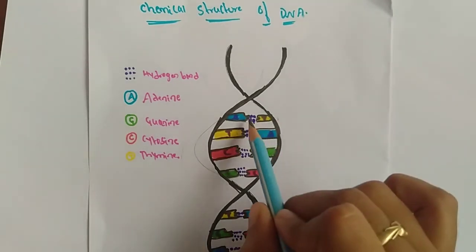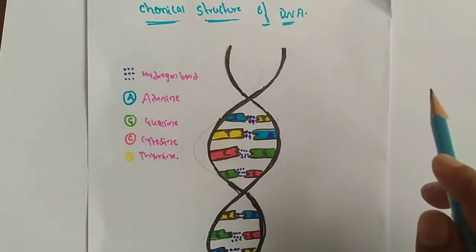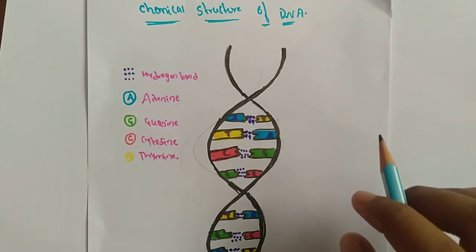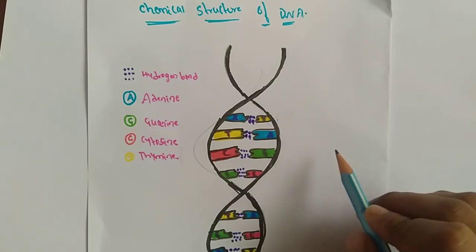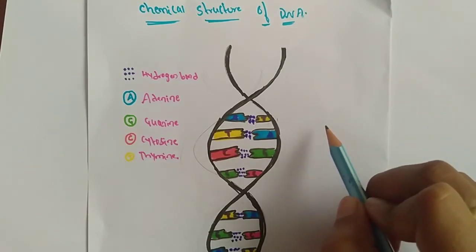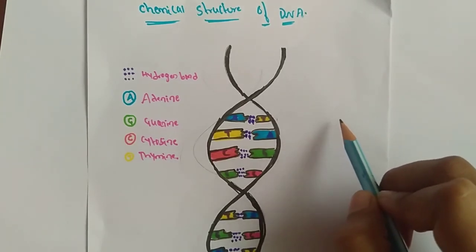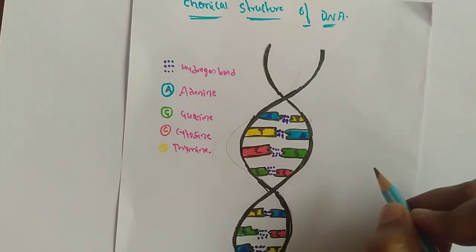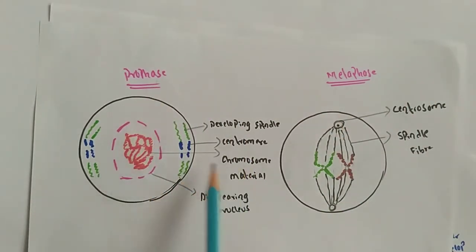Adenine always binds with thymine, and cytosine always binds with guanine — these are connected by hydrogen bonds. DNA replication is the biological process of producing two identical replicants of DNA from one original DNA molecule. DNA is made up of chemical building blocks called nucleotides, which are made up of three parts: a phosphate group, a sugar group, and nitrogen bases.